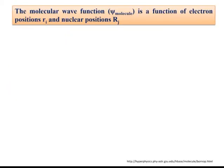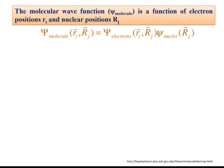The molecular wave function, ψ_molecule, is a function of electron positions r_i and nuclear positions r_j. The equation is: ψ_molecule(r_i, r_j) = ψ_electron(r_i, r_j) × ψ_nuclei(r_j). This means the molecular wave function depends on both nuclear and electron positions. Similarly, the electronic wave function ψ_electron also depends upon the position of electrons and nuclei, whereas the nuclear wave function ψ_nuclei depends only on nuclear positions.